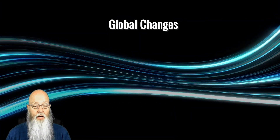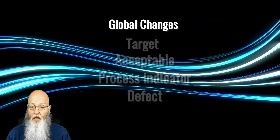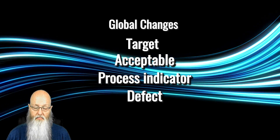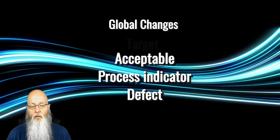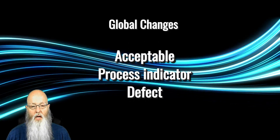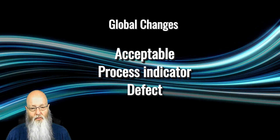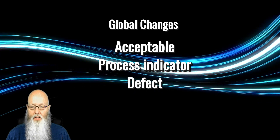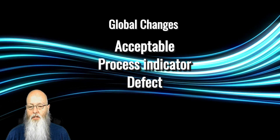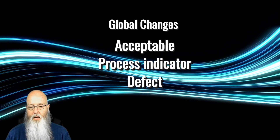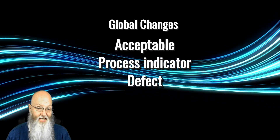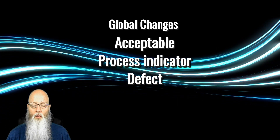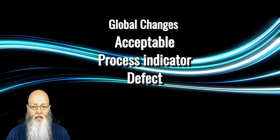One big change that happened throughout the document is the removal of the target condition. Target is and was the goal — near perfect and what should be strived for in all electronic assembly operations — but it's not really a condition as are acceptable, process indicator, or defect conditions.